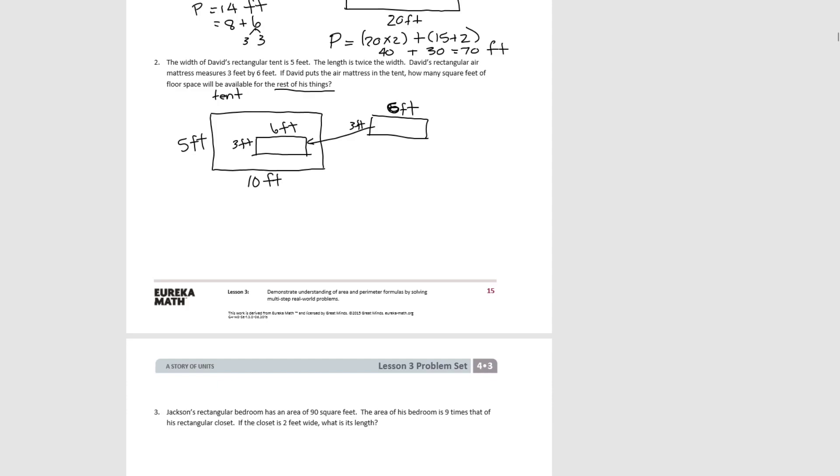So let's first figure out the area of the air mattress. Area equals length times width. So the area would be 18 square feet. The area of the tent would be 50 square feet. Now if we subtract the two, 50 (the area of the tent) minus 18 (the area of the air mattress), we see that the space that would be left for the rest of his things would be 32 square feet.